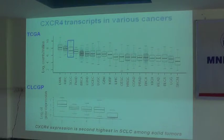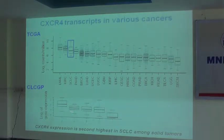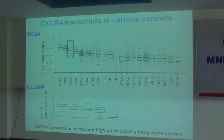This validated the data we had seen in cell lines and helped us move forward. When we looked at different kinds of lung cancers, we also found that small cell lung cancers have the highest level of this protein compared to other subtypes of lung cancers.